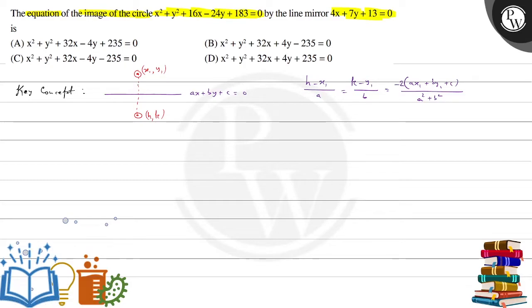And of course, dousara concept is how to find out the center and radius from the general equation of given circle, joki minus g, minus f center ho jayega, or root over g square plus f square minus c will become the radius of this circle. Now, let us try to solve this problem.